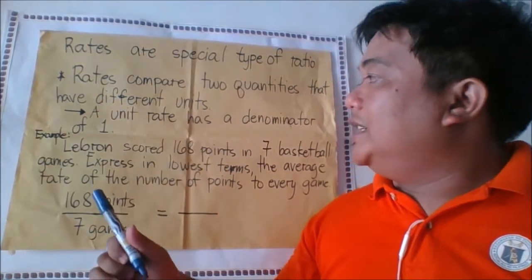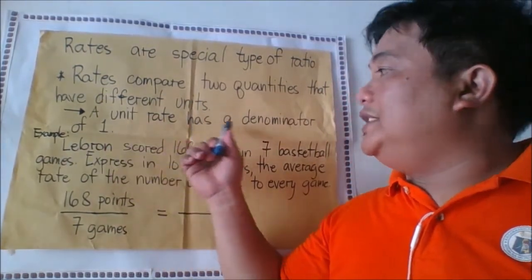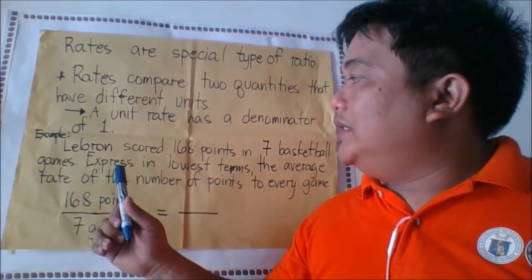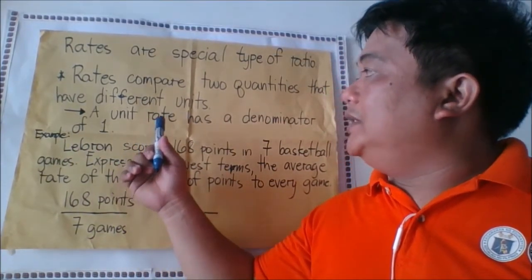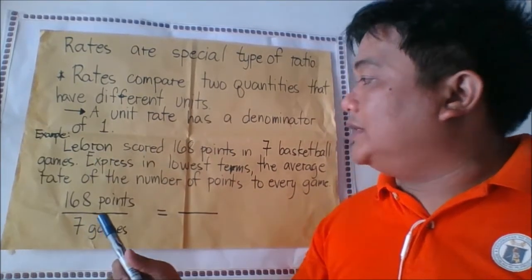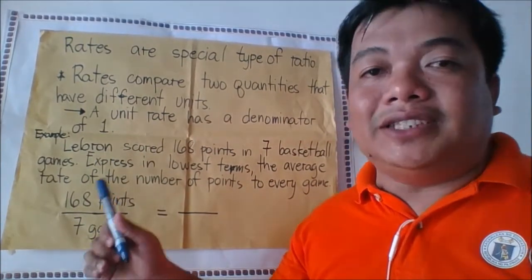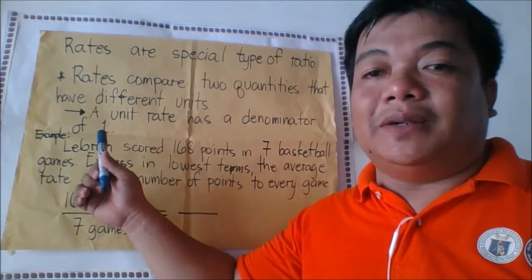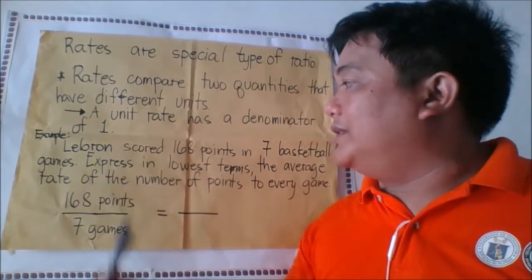A unit rate has a denominator of 1, so the denominator of a unit rate is always 1. You can identify easily a unit rate because of the denominator 1.